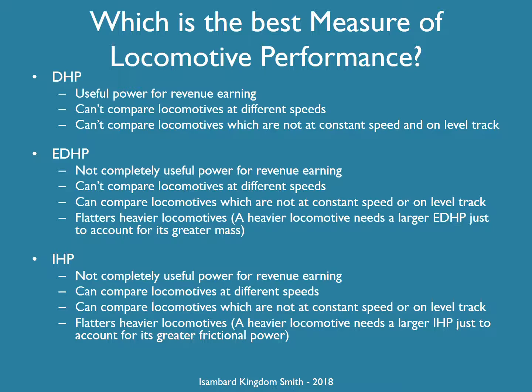However, equivalent drawbar horsepower does flatter heavier locomotives. If you've got two locomotives with the same drawbar power climbing a hill, the heavier locomotive will have a higher equivalent drawbar horsepower, but while it's climbing the hill it's no more powerful than the smaller locomotive. Indicated horsepower is good for comparing different locomotives at different speeds, and when they're not at constant speed or on level track. However, it also flatters heavier locomotives, because a big heavy locomotive needs a high indicated power just to overcome its own higher friction.